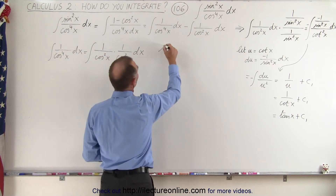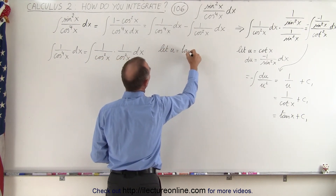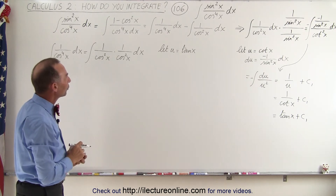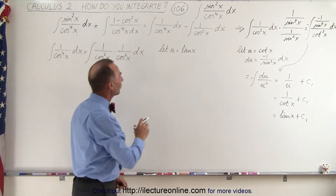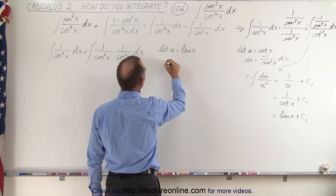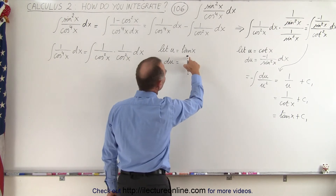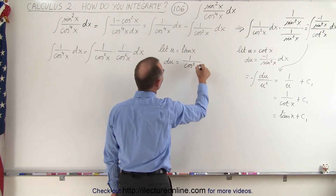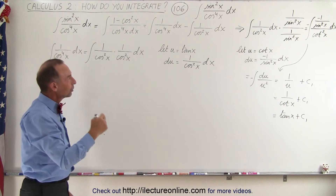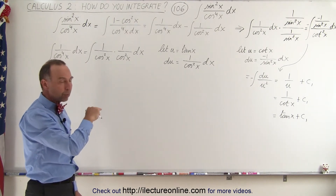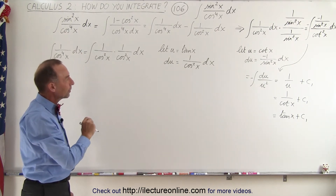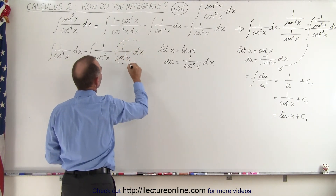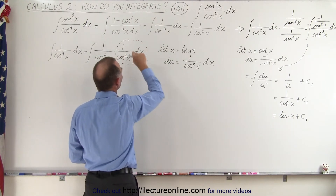We're going to let u equal the tangent of x. Follow this through and see what happens. If we let u equal the tangent of x, then du will be equal to 1 over cosine squared of x dx. The tangent is sine over cosine, so we end up with sine squared plus cosine squared in the numerator divided by cosine squared in the denominator, giving 1 over cosine squared dx. This portion can now be replaced by du.